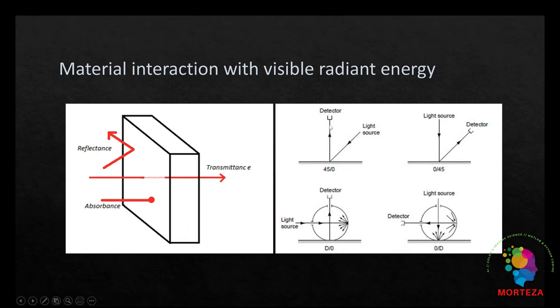Shown here. The first one, which is here, would be diffuse normal and normal diffuse on the right side. The second was 45 normal and normal 45. So, the first one is light source and the second one is the viewing.